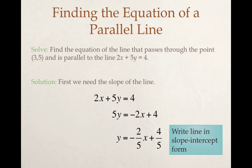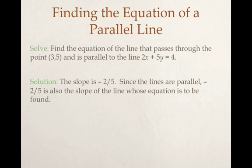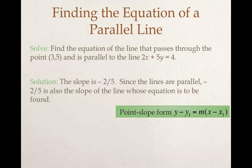Once I'm in slope-intercept form, I can say aha, I know the slope. The slope is negative 2 fifths. It was in the M position. Since the lines are parallel, negative 2 fifths is also going to be the slope of the line I want. So I'm going to use a slope of negative 2 fifths and the point (3,5).